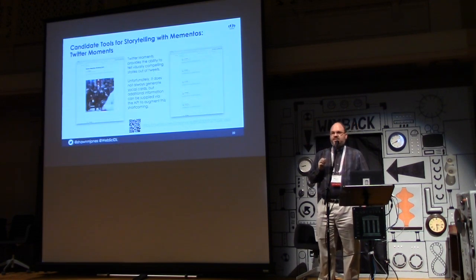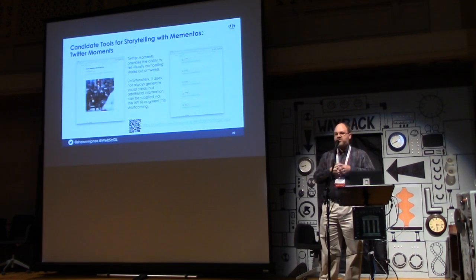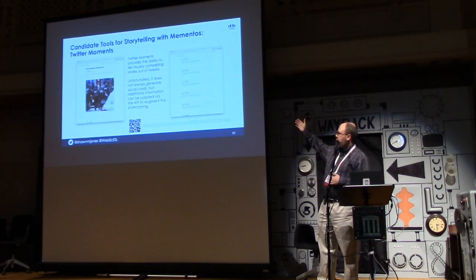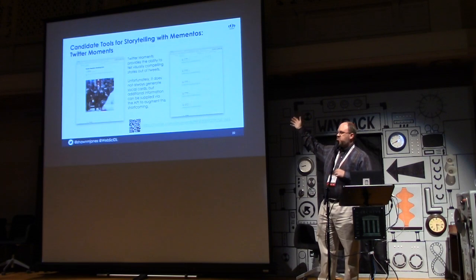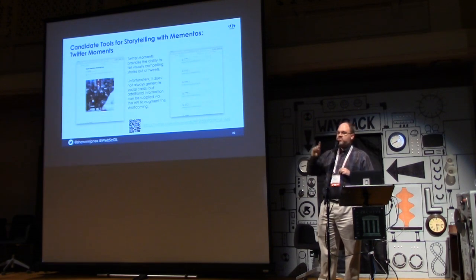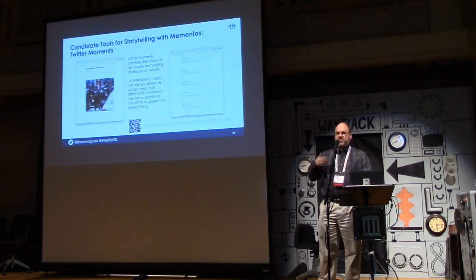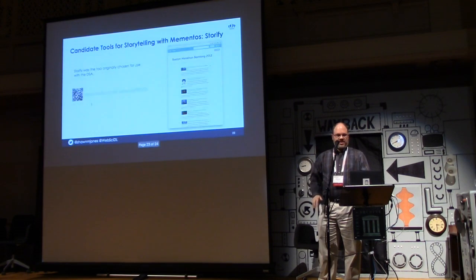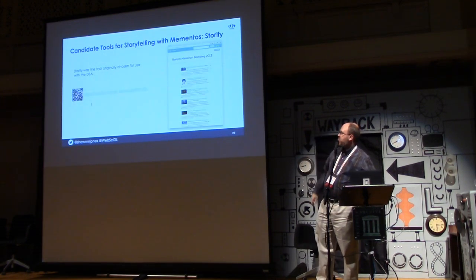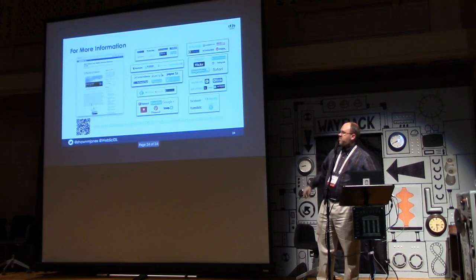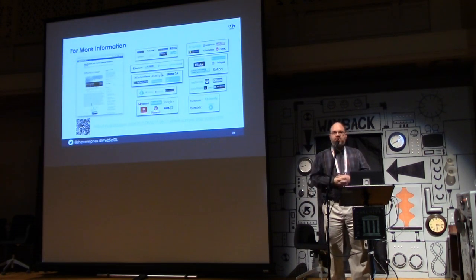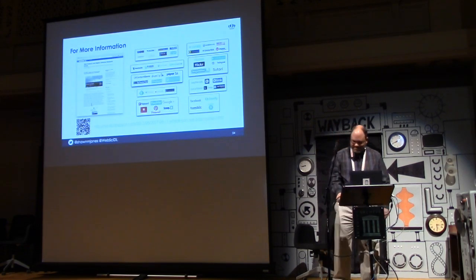Twitter Moments is probably the weakest tool in this set. You can create a collection of tweets that likely had social cards, but once you put them into Twitter Moments, the social cards don't always seem to survive. However, Twitter does have an API, so you can augment tweets with pictures and basically generate your own social cards if there are problems. And of course there is Storify, which was used by the Dark and Stormy Archives Framework. For more information, please take a look at my blog post where I go over these tools in a lot more detail. Thank you.